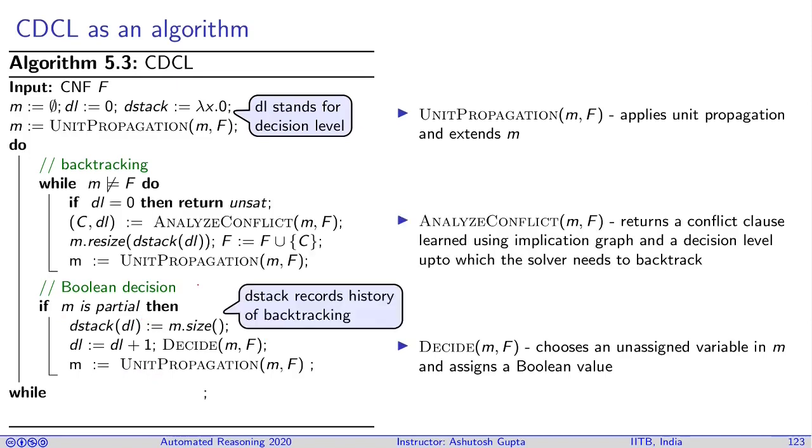Now let's look at the backtracking part. You run this loop until the current assignment does not satisfy. If your decision level is zero, you say, well, I have not decided anything and I reached a conflict. That means it's clearly unsat.